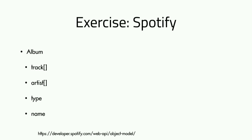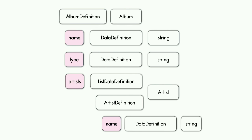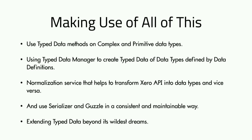Let's apply this to a different example — implementing a Spotify API. Spotify has an album model with a list of tracks, a list of artists, a type, and a name. We'd have an album definition as our data definition class. The get property definitions method describes properties like name, type, and artists. Each property is instantiated with a data definition of a certain type — you can map out your data types this way.